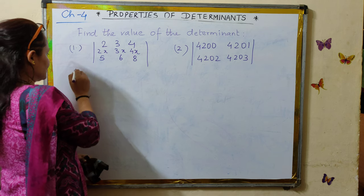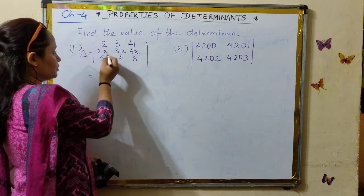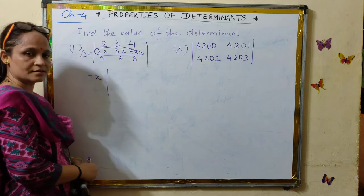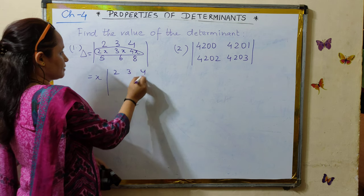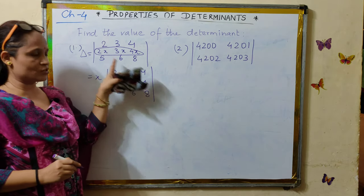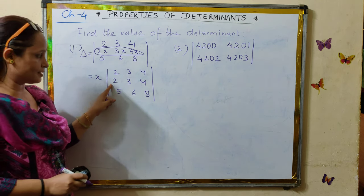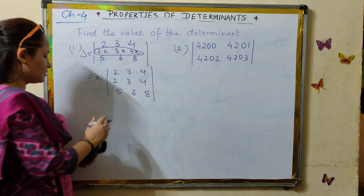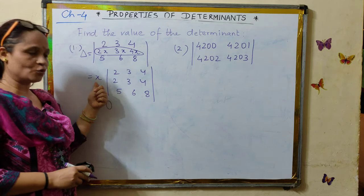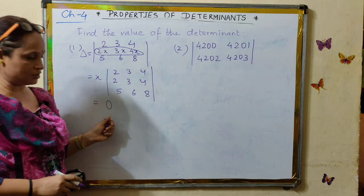See the first determinant. If you observe the second row and the first row very carefully, in the second row you can take x as a common factor. You can take x outside the determinant from the second row. Once you take x common, the first two rows of the determinant become identical. By another property, the determinant vanishes. So the value of the determinant is 0.